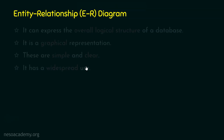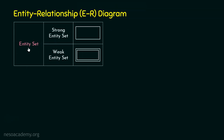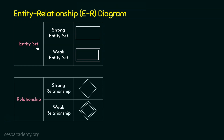Now let's look at the notations used in the ER Diagram. Entity sets are represented using rectangles — a single rectangle means a strong entity set, and a double rectangle means a weak entity set. For relationships, a single diamond represents a strong relationship, and a double diamond represents a weak relationship.